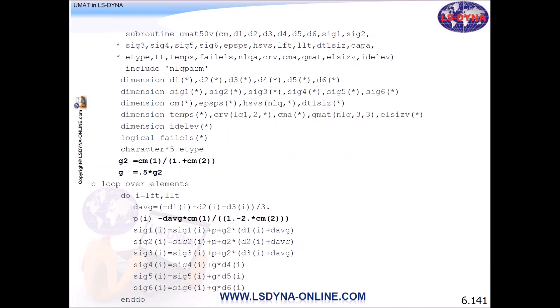You can see that the argument of the subroutine changes as well. It's not like the scalar one, it's different. CM is the same like before, which is the material constant array. These are the properties that you send to the subroutine. If you remember, the strain increments were EPS. Now the strain increment is D1, D2, D3, D4, D5, D6.